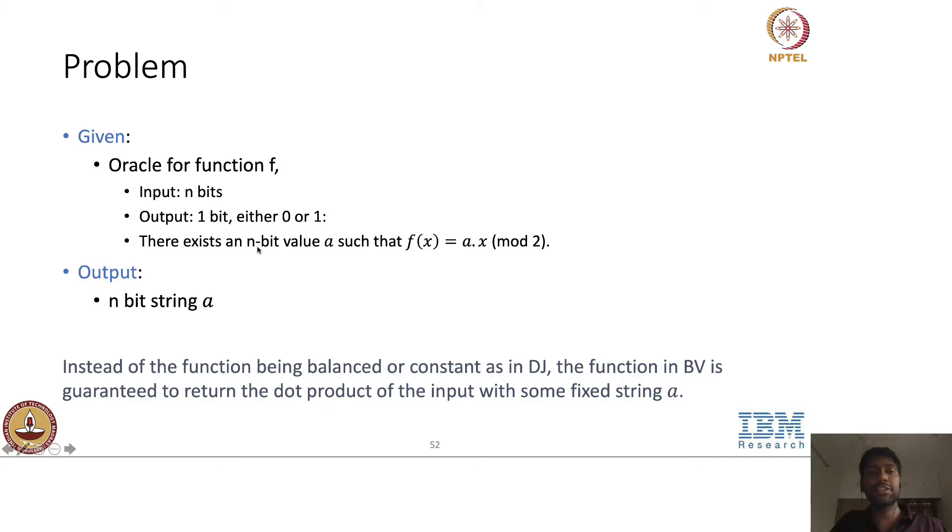But the change here is, here the function is of a type a dot x. So earlier in Deutsch-Jozsa, we were given the guarantee that the function is either a constant function or a balanced function. But here, we are again given a guarantee, but of a different form. We are given a guarantee that there exists a value a embedded in f such that for any input x given to f, the output is a dot x mod 2. That is, it's just a dot product between a and x in mod 2.